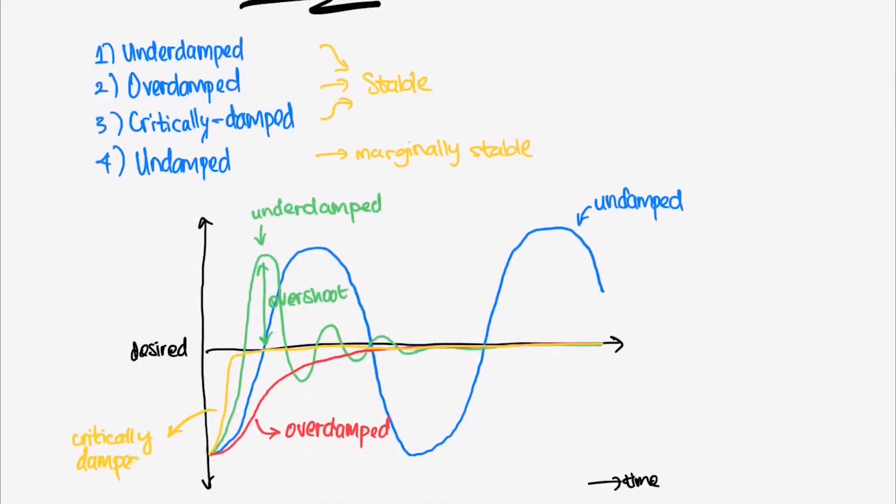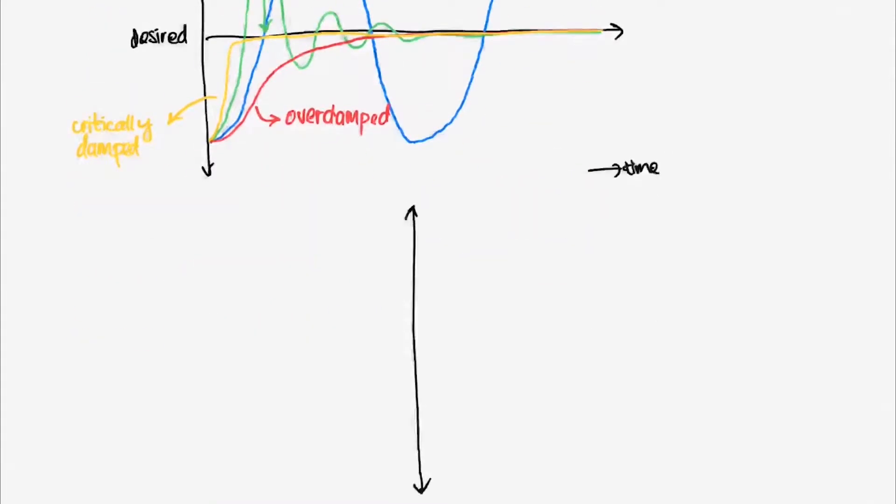It may not be obvious by just looking at the graph. It is clearer if we look at the pole location. An un-damped system's poles are located on the imaginary axis. Since it is a second order system, there are two poles.